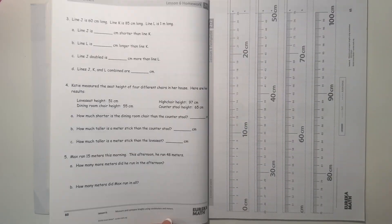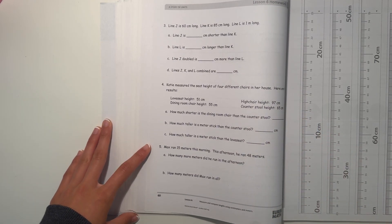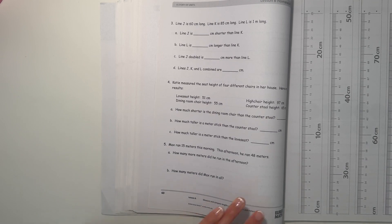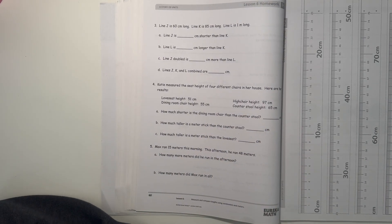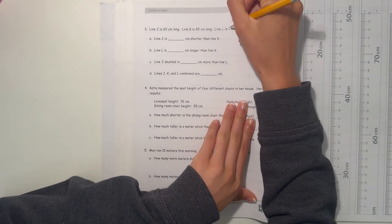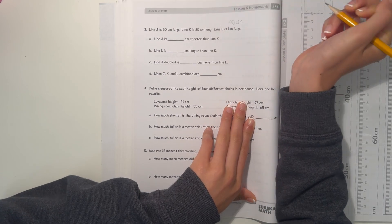Alright, next thing. So number 3. Line J is 60 centimeters long. Line K is 85 centimeters long. Line L is 1 meter long. So 1 meter is 100 centimeters. So we can also change that to 100 centimeters to help us.